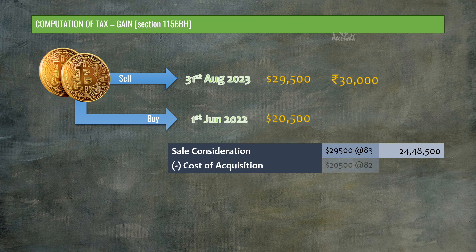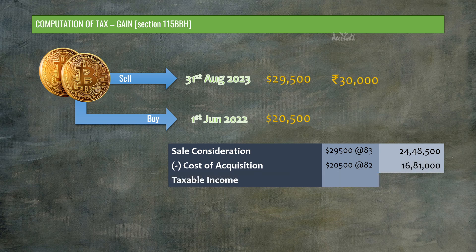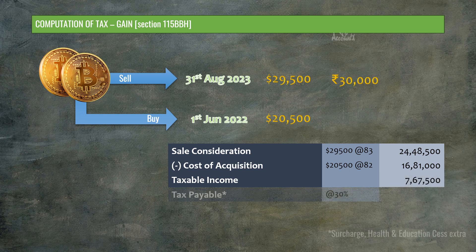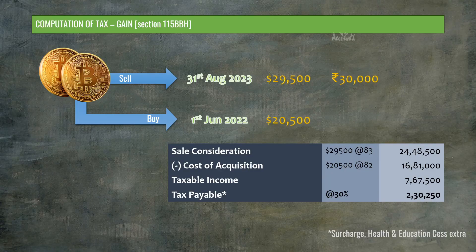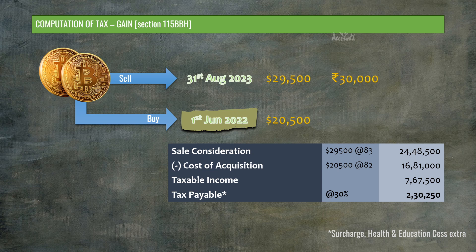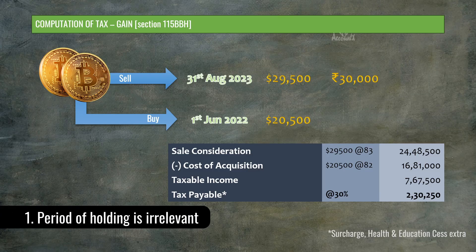The cost of acquisition is $20,500 multiplied by say 82, which equals Rs. 16,81,000. The difference between these two is the taxable income — that is Rs. 7,67,500 — on which you are required to pay tax at 30%. There are a few things to remember here. The period of holding between date of sale and date of purchase is about 15 months here, yet the cost of acquisition is not adjusted for inflation. So period of holding is irrelevant, and you don't get indexation benefit.